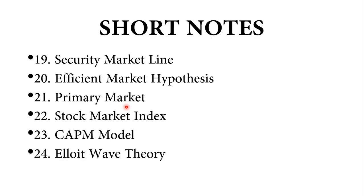Next: security market line. Then: efficient market hypothesis — a short note on efficient market hypothesis, again very important. Next: write a short note on the primary market. Then: a short note on stock market index. Then: CAPM model — the Capital Asset Pricing Model — very important. Then again: Elliot wave theory, which I mentioned even in the long answer section is very important from both a long answer as well as short note point of view.